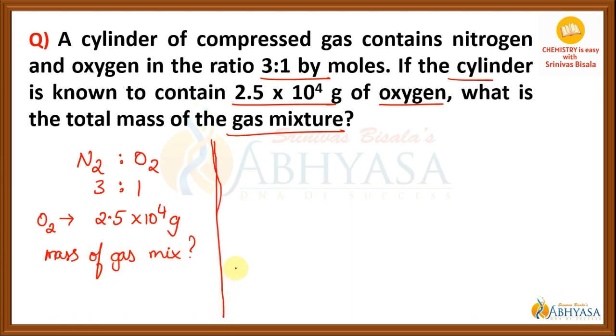Let me tell you how to solve this. Here, the ratio of number of moles of nitrogen and oxygen is given and oxygen mass is given. So from mass of oxygen, you can get the number of moles of oxygen. As the ratio of nitrogen and oxygen moles is given, from the number of moles of oxygen, you can calculate the number of moles of nitrogen.